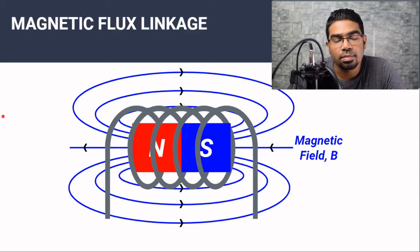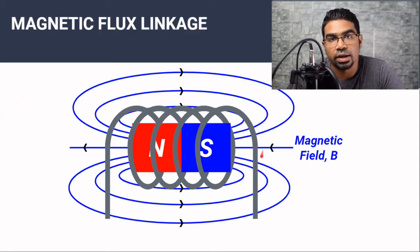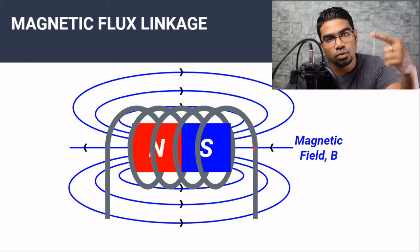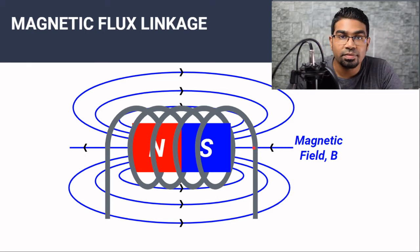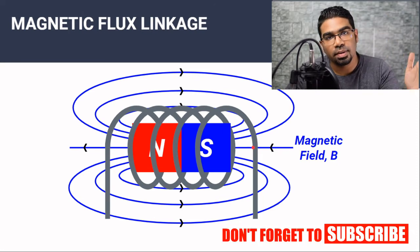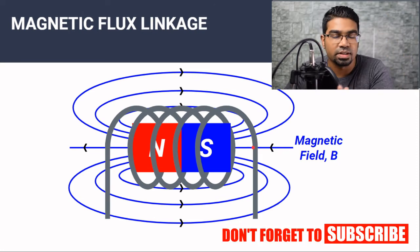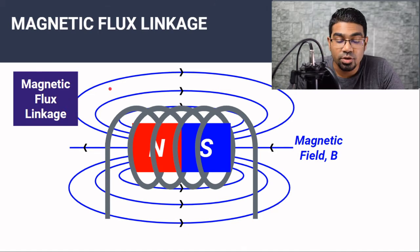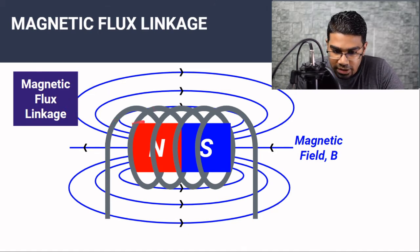Magnetic flux linkage comes into play when we are using a solenoid as the conductor. When there is a solenoid with a few turns, the magnetic flux linkage is simply the magnetic flux through a single turn multiplied by the number of turns. So the magnetic flux linkage will be the magnetic flux through all the turns of the solenoid.